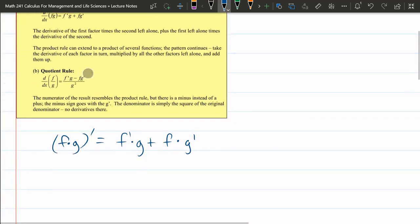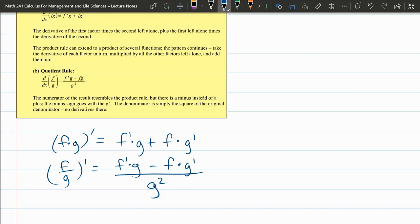So that's the product rule. The quotient rule, f over g prime, is f prime times g minus f times g prime divided by, now this is g squared, not the derivative or second derivative of g, but g squared.